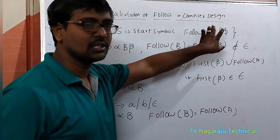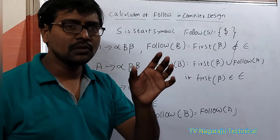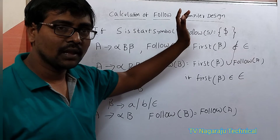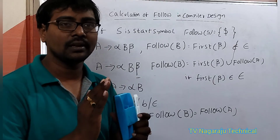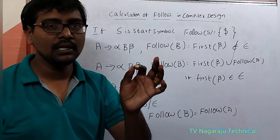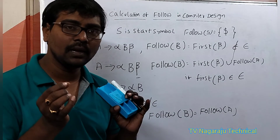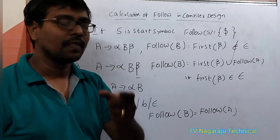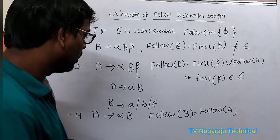Simple rules summary: if it is the start symbol, it must contain dollar. To calculate FOLLOW for a non-terminal, identify the non-terminal in the right-hand side of the grammar. Whenever it appears, check the next symbol. If the next symbol is a terminal, that is the answer. If the next symbol is a non-terminal, calculate its FIRST. If FIRST does not contain epsilon, that is the answer. If FIRST contains epsilon, the answer is FIRST of that non-terminal along with FOLLOW of the left-hand side variable. Now we will move to an example.